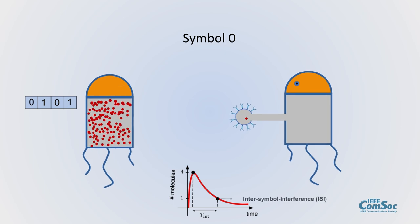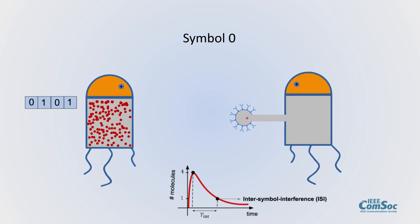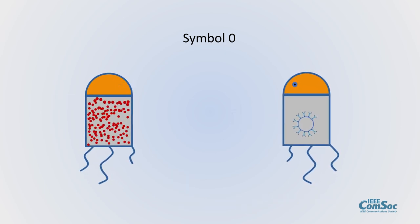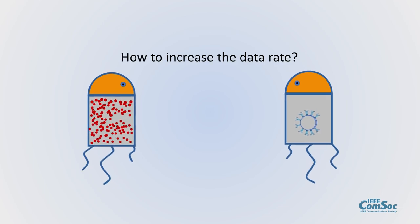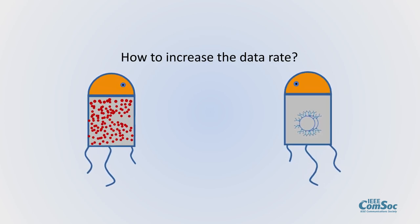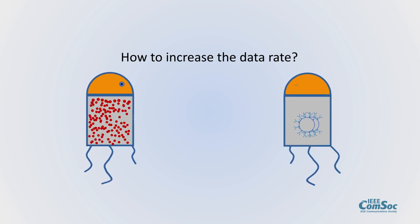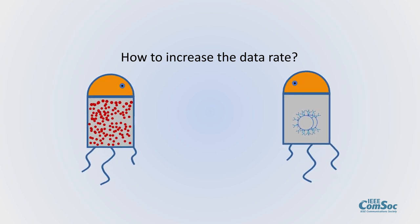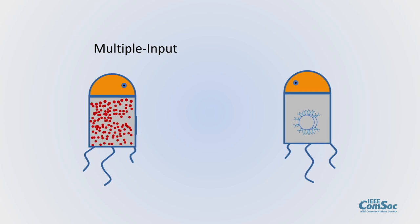This is called inter-symbol interference. In molecular communication, the data rate is low because of these interferences and the slow nature of diffusion. In order to increase the data rate, we can use a technique called multiple input multiple output or MIMO.